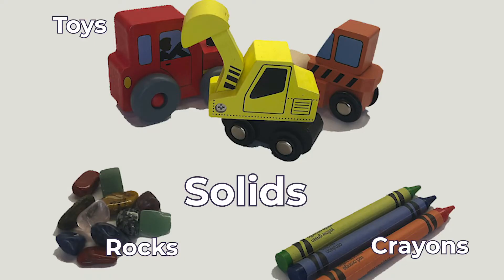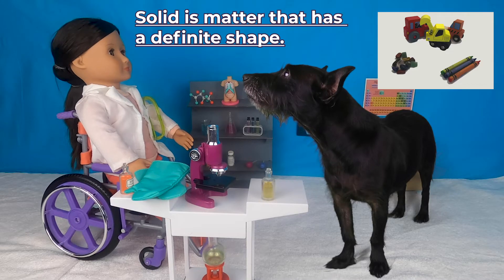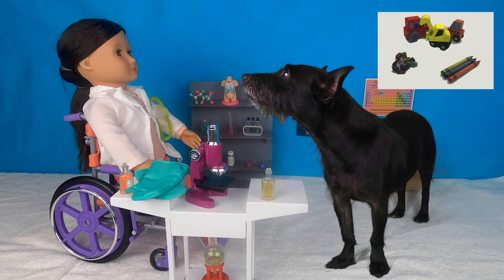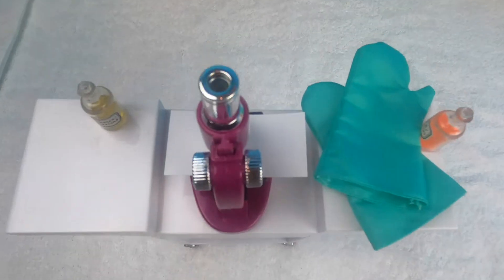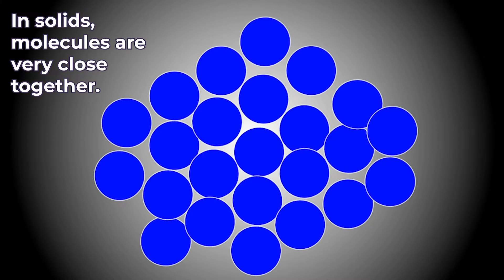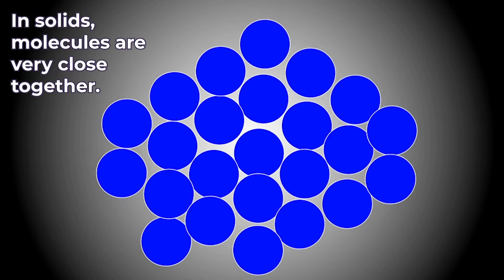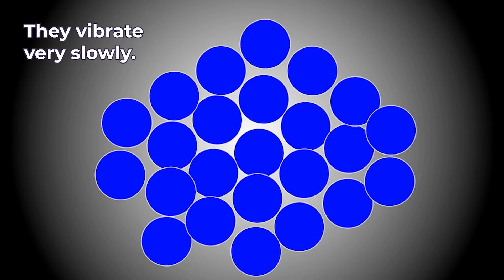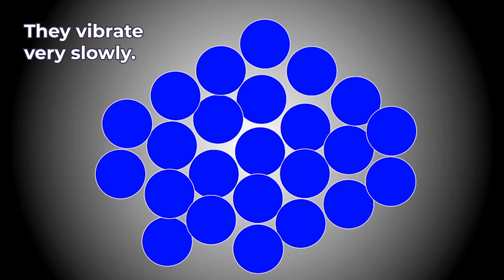Let's start with solids. These toys, rocks, and crayons are all solids. Solid is matter that has a definite shape. Let us take a closer look using our microscope. In solids, molecules are very close together and they vibrate very slowly.